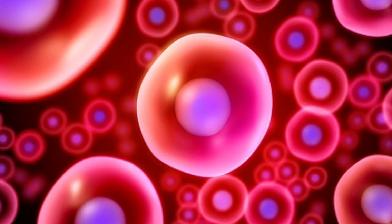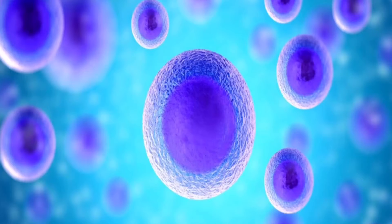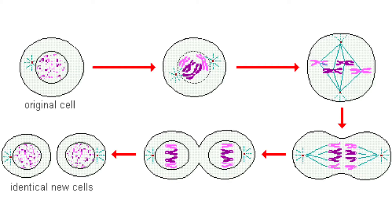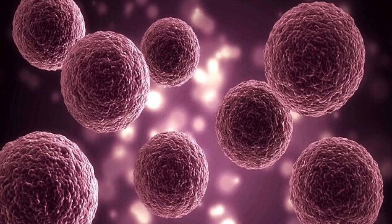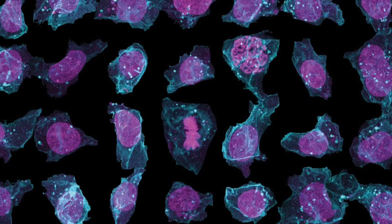Your digestive system does that job. Your body has more than 200 different kinds of cells. You began life as a single cell — how did you get so many kinds of cells? This single cell underwent cell reproduction to produce two cells, the two cells produced four, and so on, until you had trillions of cells.